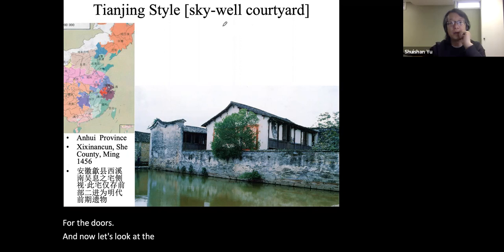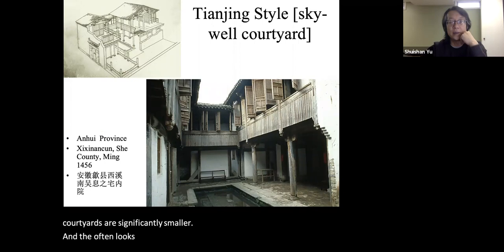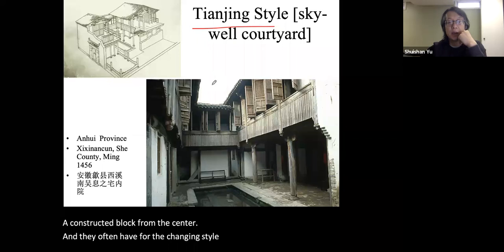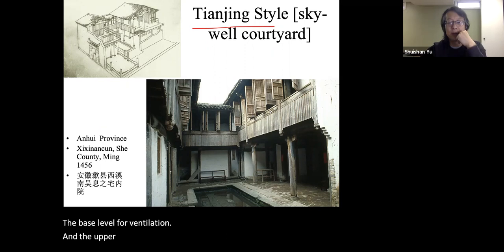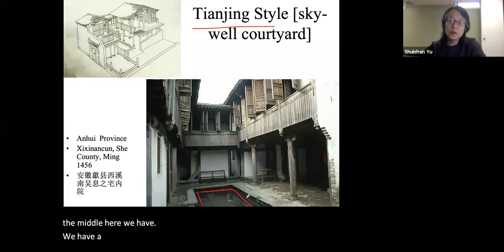Now let's look at the Skywell style. The Skywell courtyard's spaces are significantly smaller and often look like an empty space created by carving out the center of a constructed block. For the Tianjin-style courtyard house, multi-story construction is the norm — often two stories, with the base level for ventilation and the upper story for sleeping chambers. Their courtyards are used more as a collection point for water than for activity, with a cistern in the middle for water collection.